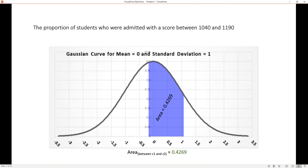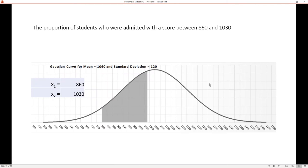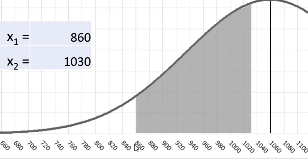Let's go on to the next problem. Part B is asking for the proportion of students who were admitted with a score between 860 and 1030. Let's see what that looks like on a diagram. This is what the original normally distributed data diagram would look like. 860 is right here, 1030 is right here between 1020 and 1040. And this shaded area would represent the proportion of students that scored between those two scores.